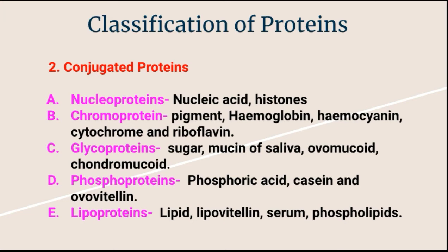Nucleoproteins generally occur most abundantly in the cell nuclei and are generally a combination of histones with nucleic acid. Histones and nucleoproteins were already discussed in the last lecture. Nucleoprotein means it is the conjugated protein where the protein is combined with nucleic acid, and these nucleoproteins are found in the cell nuclei.